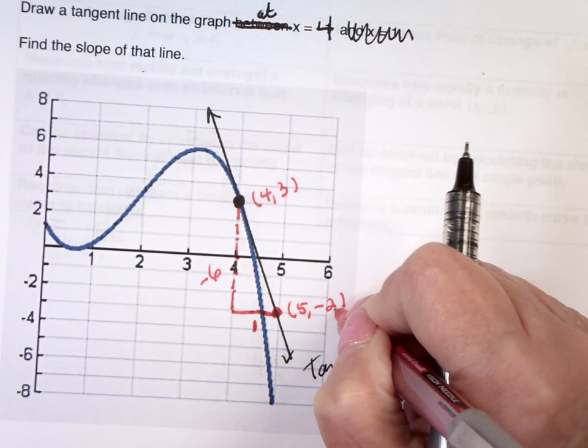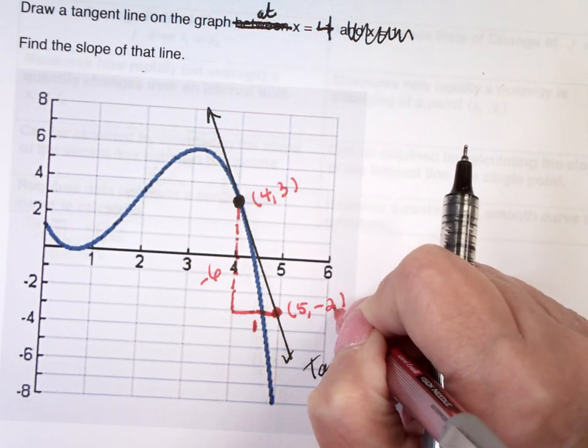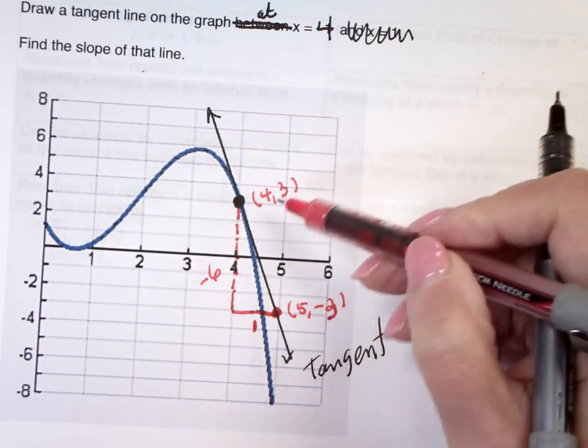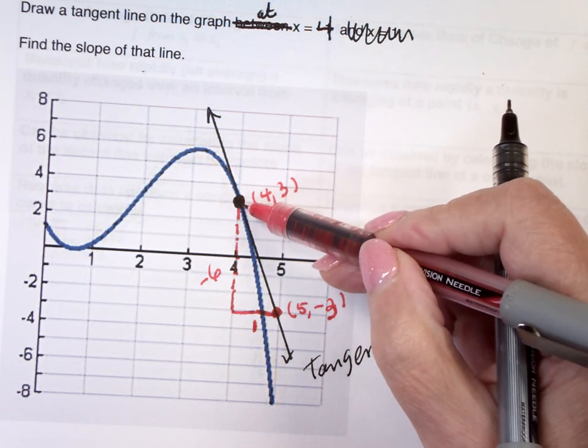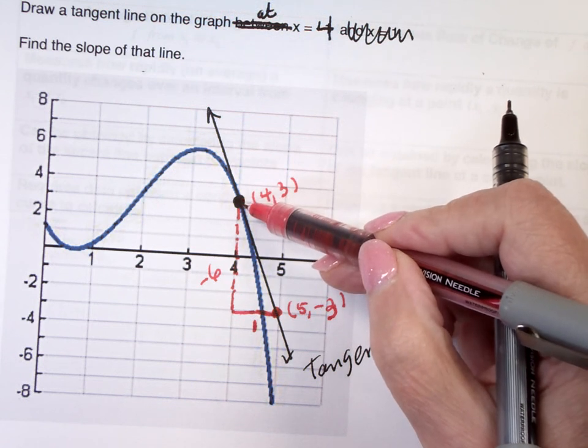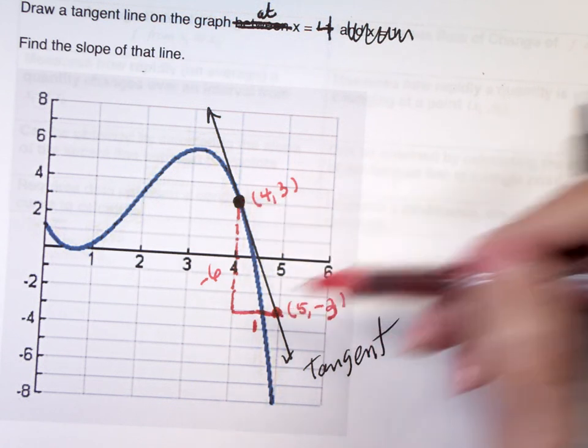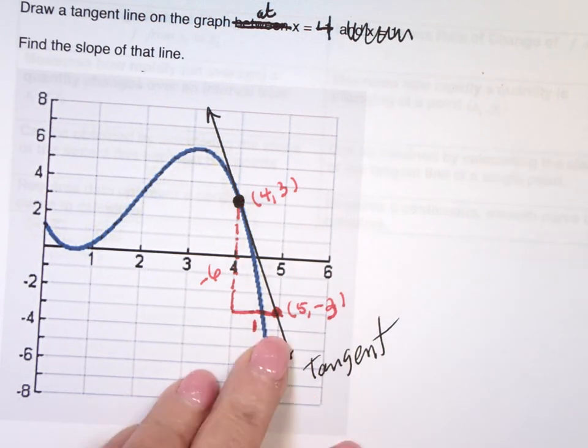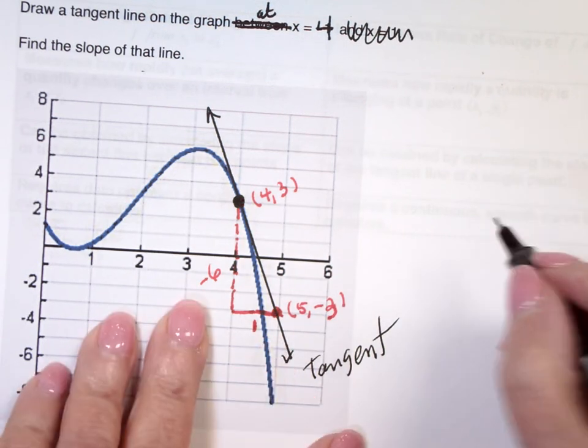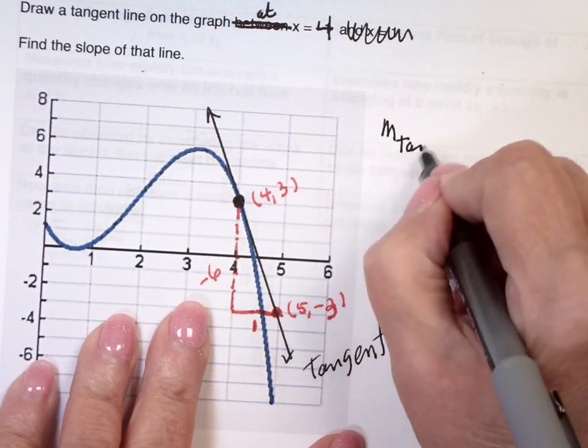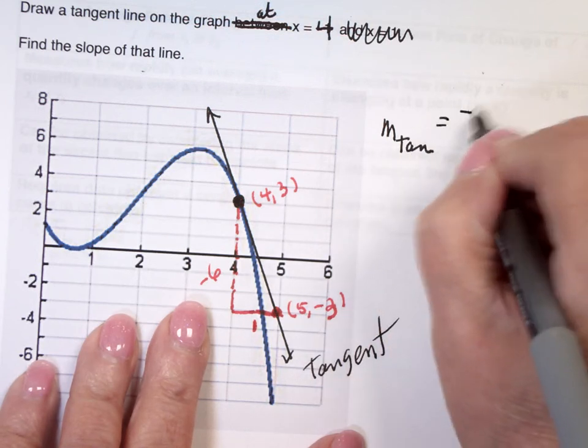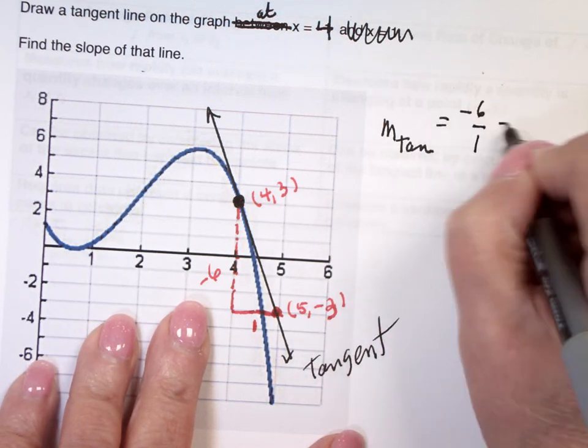Oh, you're right. It's 5, negative 3, but that doesn't help me at the moment. So 4, 3. Okay. I just, I've got a different line. That's all right. So, this says that the slope of the tangent is negative 6 over 1, or negative 6.